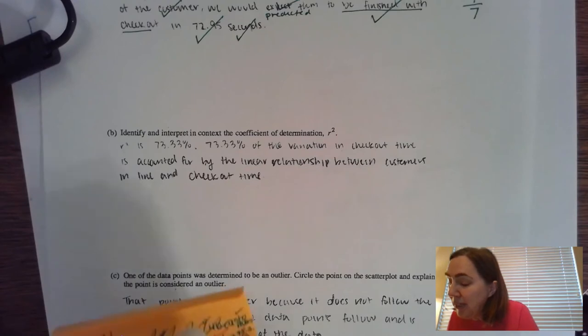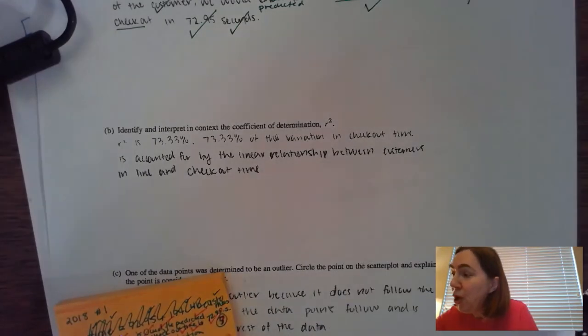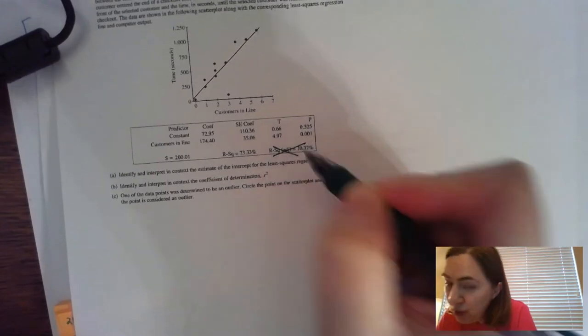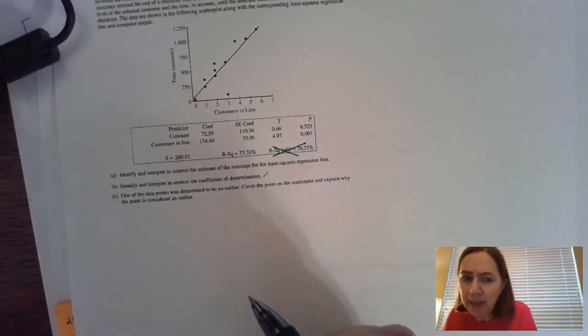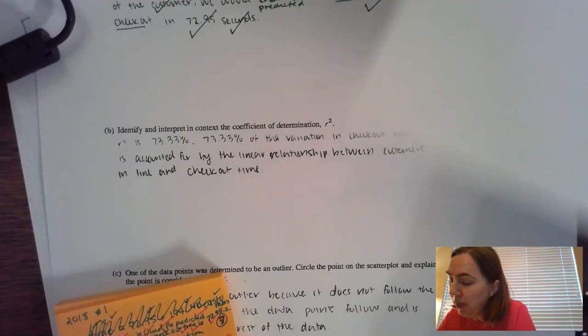Now B says identify and interpret in context the coefficient of determination, r squared. We're interpreting r squared. So when you look at it, remember you are never going to use the adjusted r squared. They're just waiting for you to make a mistake here, but 73.33% is what we're going to start off with.